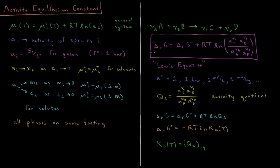This allows us to use the same derivation as in previous videos in this chapter. We have that the reaction Gibbs energy equals the standard reaction Gibbs energy — which is the Gibbs energy of reaction when the activity of every species is one — plus RT times the natural log of the activity of our products in the numerator, each to the power of their stoichiometric coefficients, divided by the activity of our reactants to the power of their stoichiometric coefficients in the denominator. This equation, expressing the Gibbs energy of reaction in terms of activities, is defined as the Lewis equation.